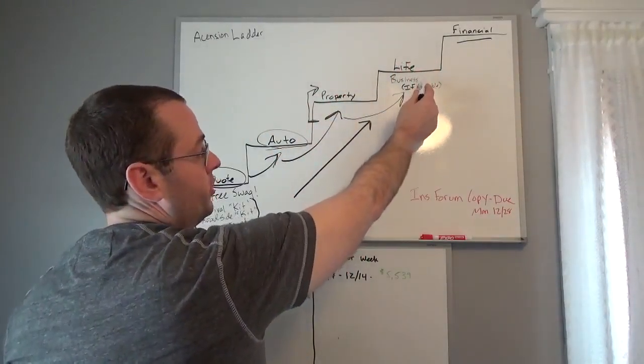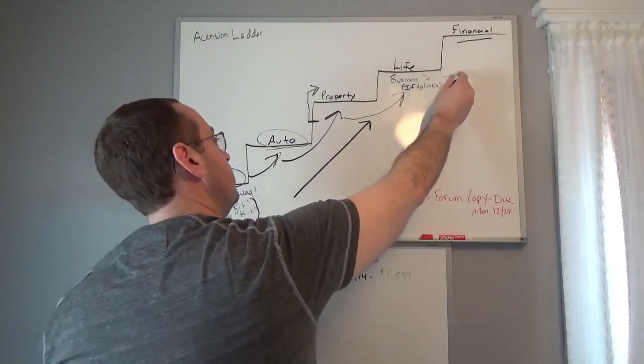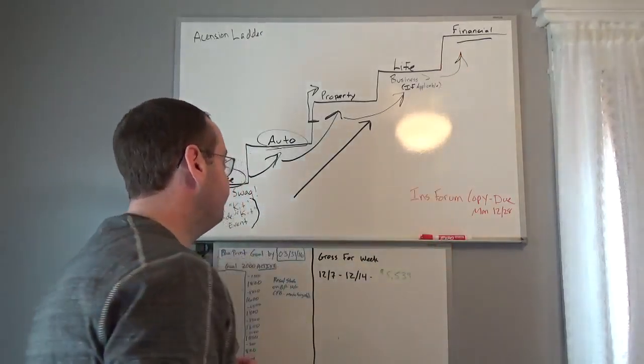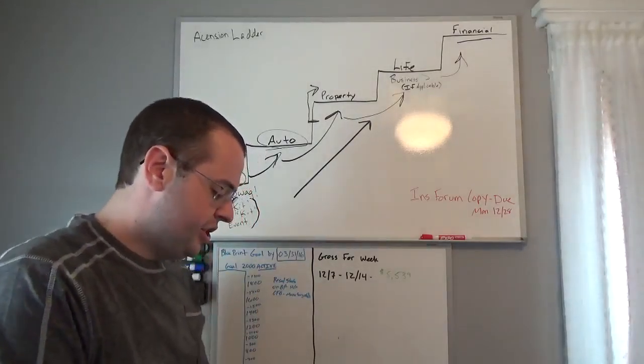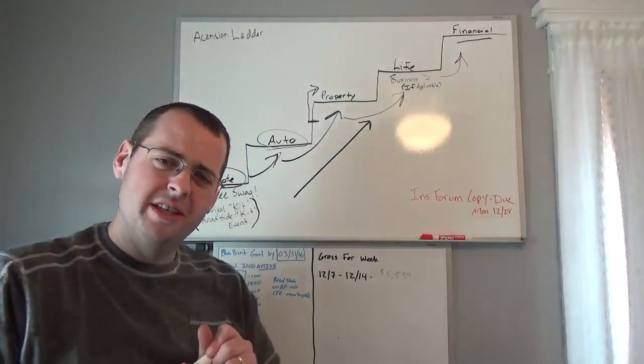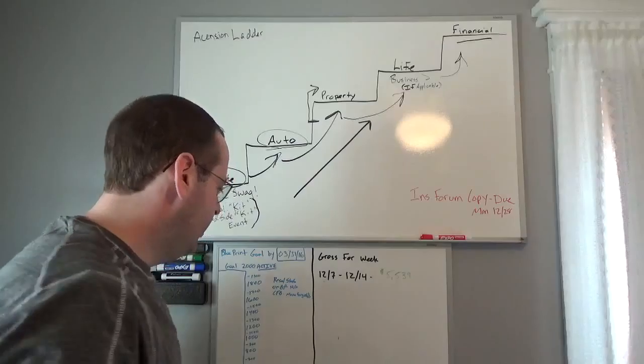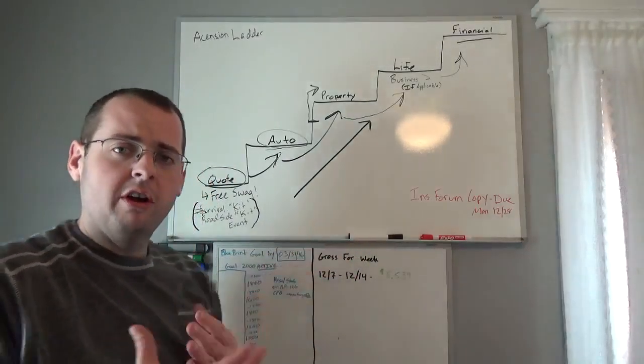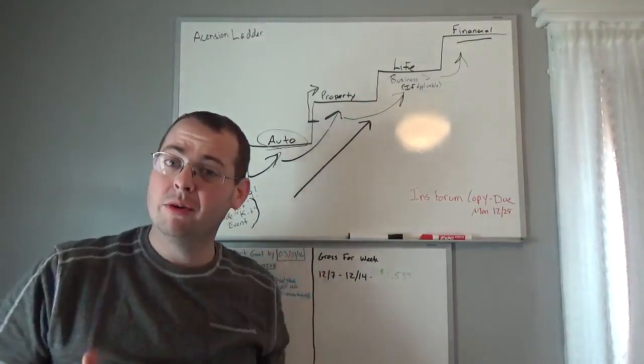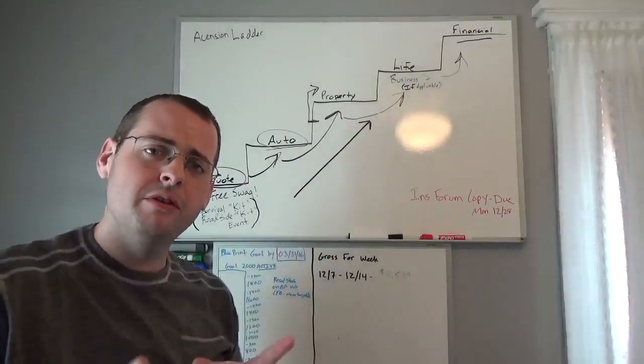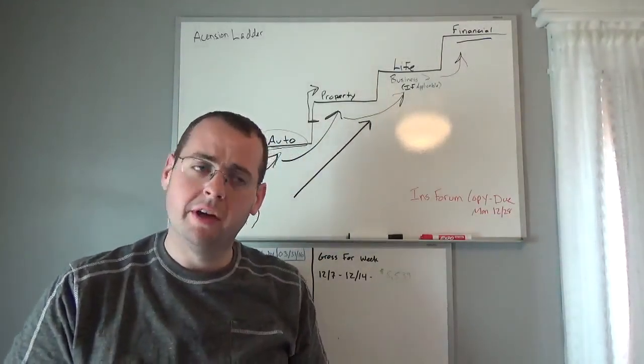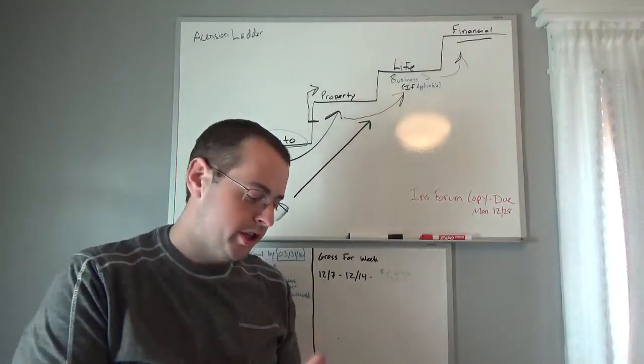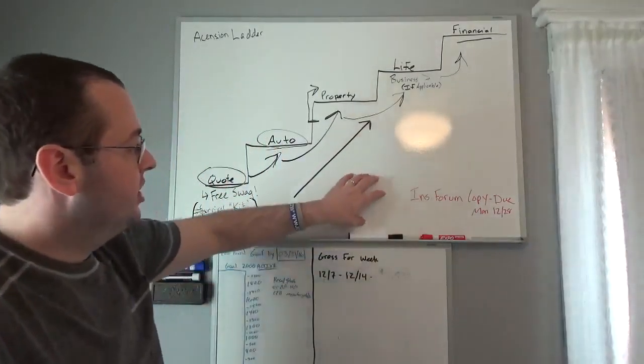Once you get their auto, you get their property, get their life or their commercial business, and then up to financial. This is something I always reviewed with my staff. Whenever you see a customer, come in contact with them, just figure out where they are on the ladder. And if you don't know what to do with it, I tell my staff: if you don't know where to go from here, just come ask me or ask somebody above you.